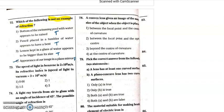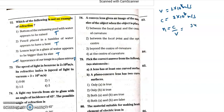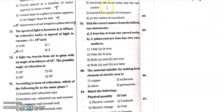Question 73: the speed of light in a medium is 2×10⁸ m/s. The speed of light in vacuum is 3×10⁸ m/s. Refractive index n = C/V = (3×10⁸)/(2×10⁸) = 3/2 = 1.5. Refractive index has no units. So question 73, option 3 is the correct answer.